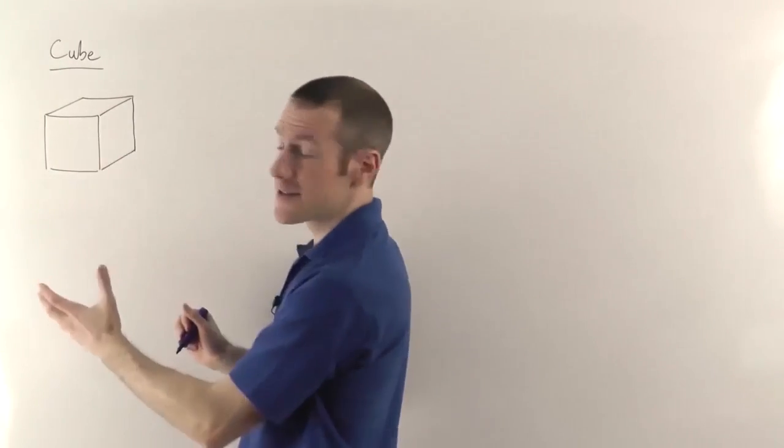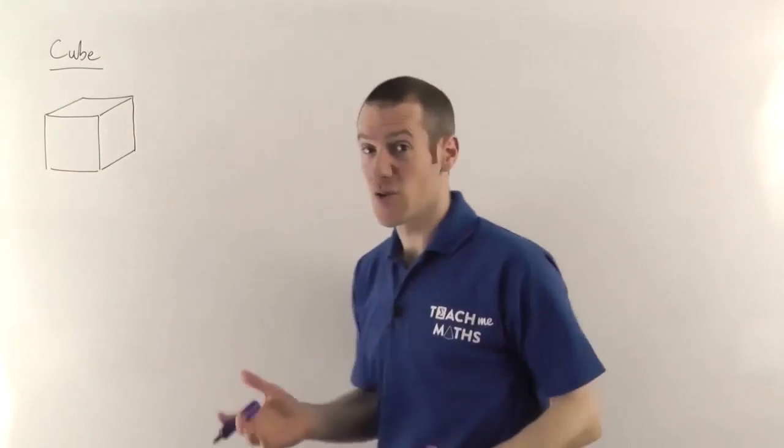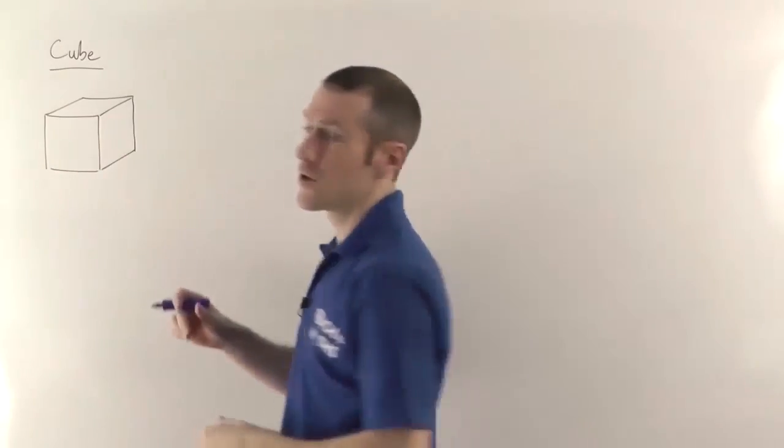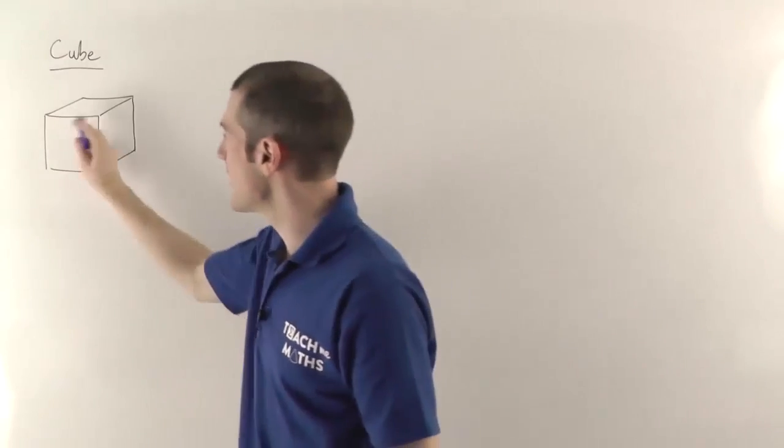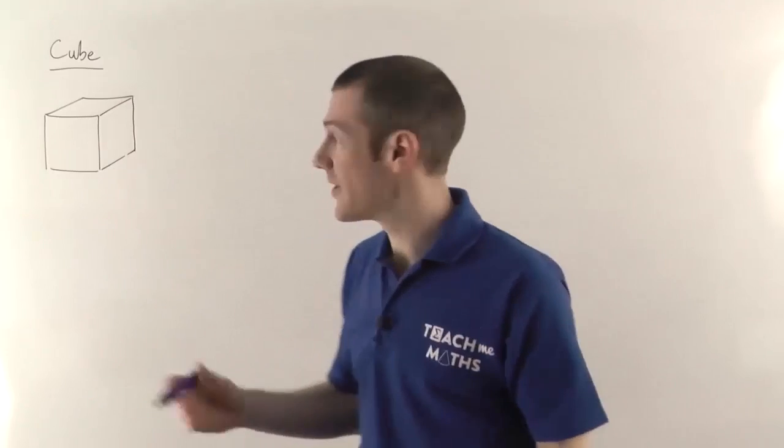So a cube will have 6 sides and each of these sides, including the ones around the back, are squares. So every face, as we call it, every side of a cube is a square. And so each of those sides will have the same properties that a square does. So there are 90 degree angles in all the corners and all the lengths around a cube are the same.